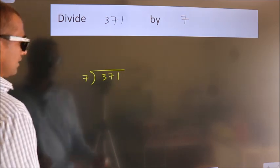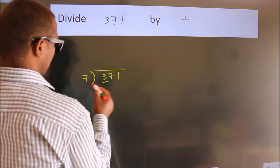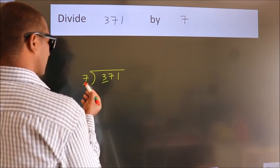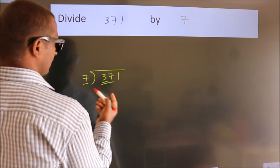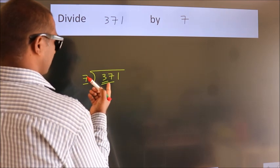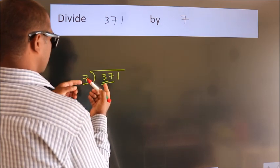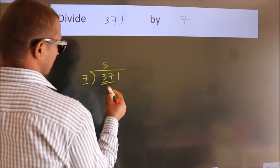Next, here we have 3, here 7. 3 is smaller than 7, so we should take 2 numbers, 37. A number close to 37 in the 7 table is 7 fives, 35.